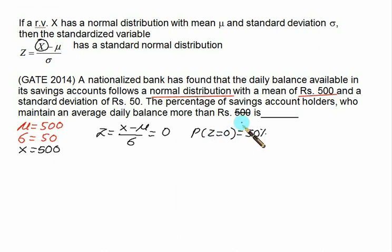Suppose he says that the balance required is more than 600. Then we can calculate the value of Z. This time X value is equal to 600, mu value is equal to 500, and sigma value is 50. So we have 100 divided by 50. This time we have Z equals to 2.